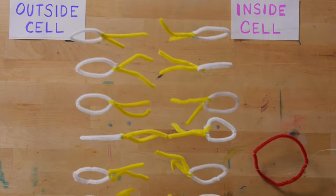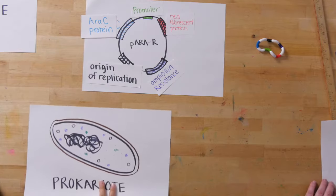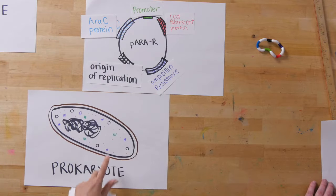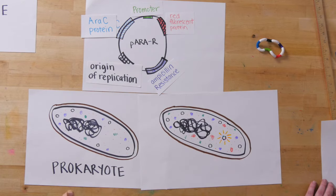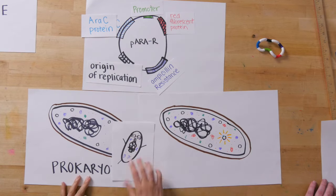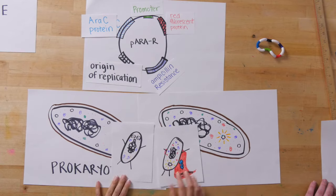Now we've transformed our bacteria. So our plasmid is now inside of our bacteria. We took this prokaryote with no plasmid and transformed it into this one. Now the plasmid's inside.